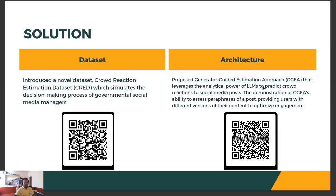As a part of the solution, we present the crowd reaction estimation dataset. Subsequently, we propose a generator-guided estimation approach that leverages the reasoning capabilities of large language models and the discriminative power of encoder-based models to predict crowd reactions of social media posts. You can download the dataset and the model artifacts by scanning the QR codes.